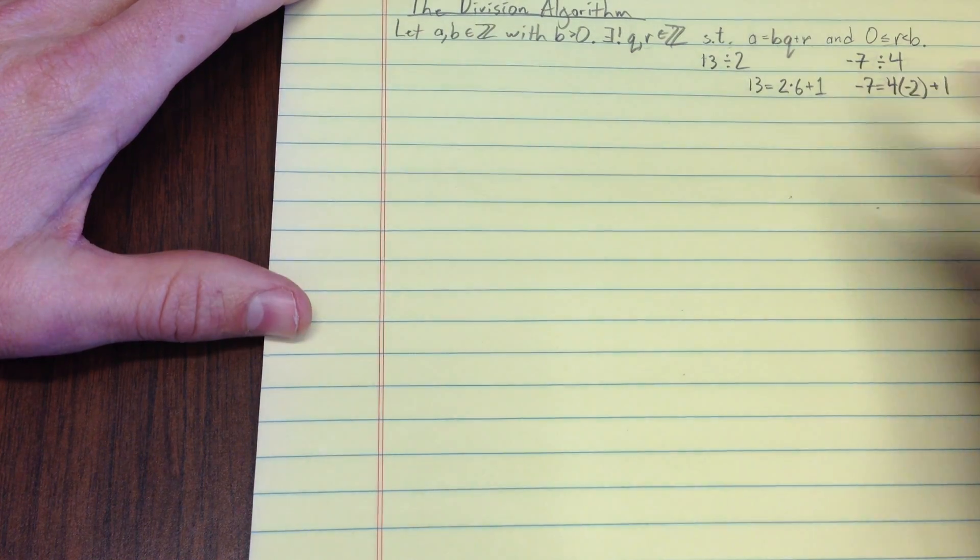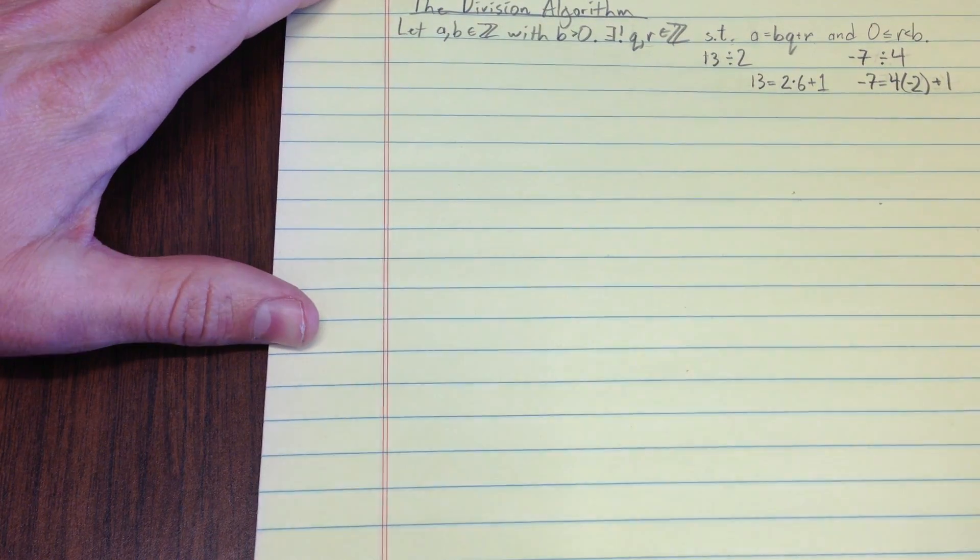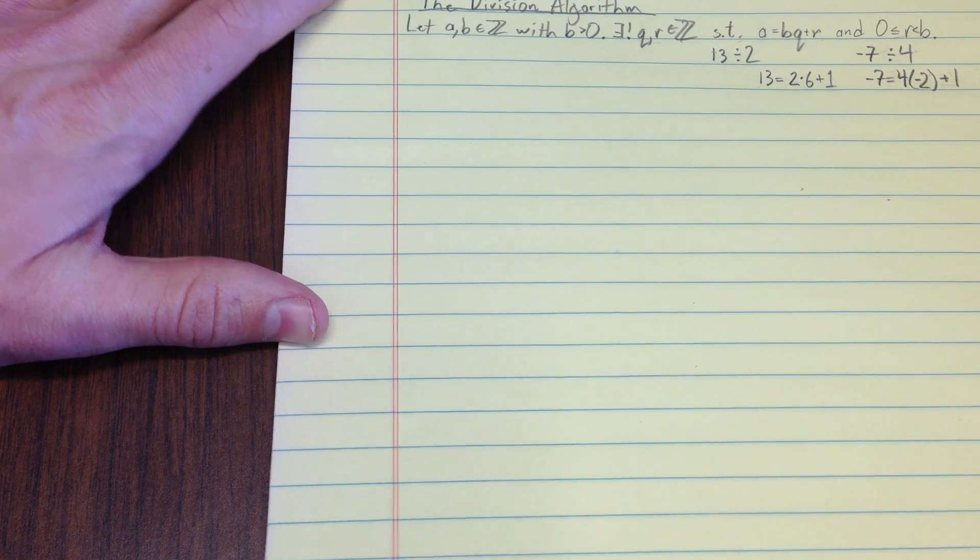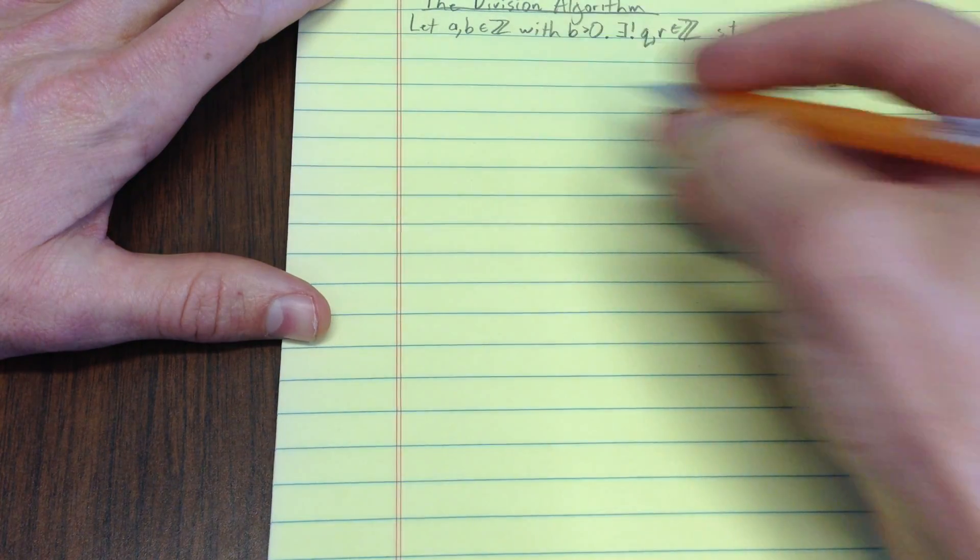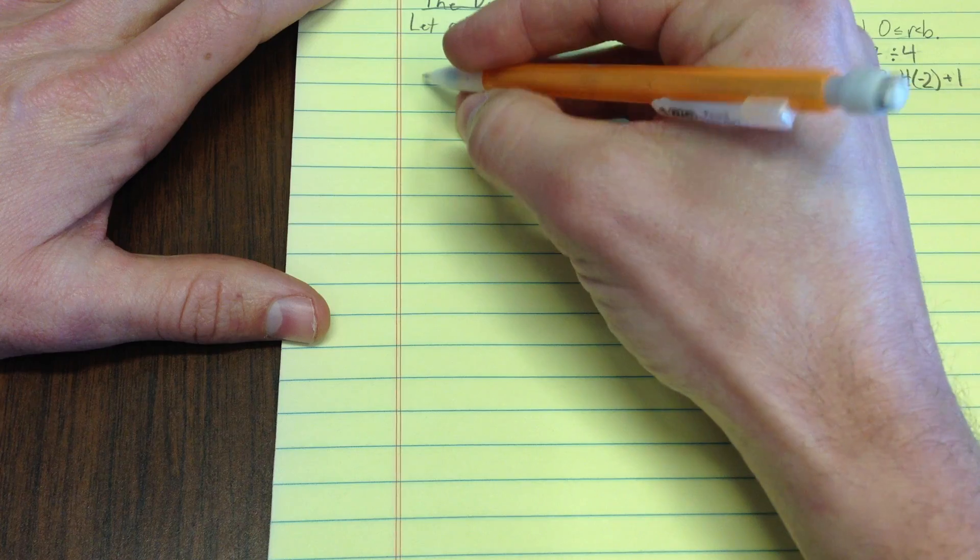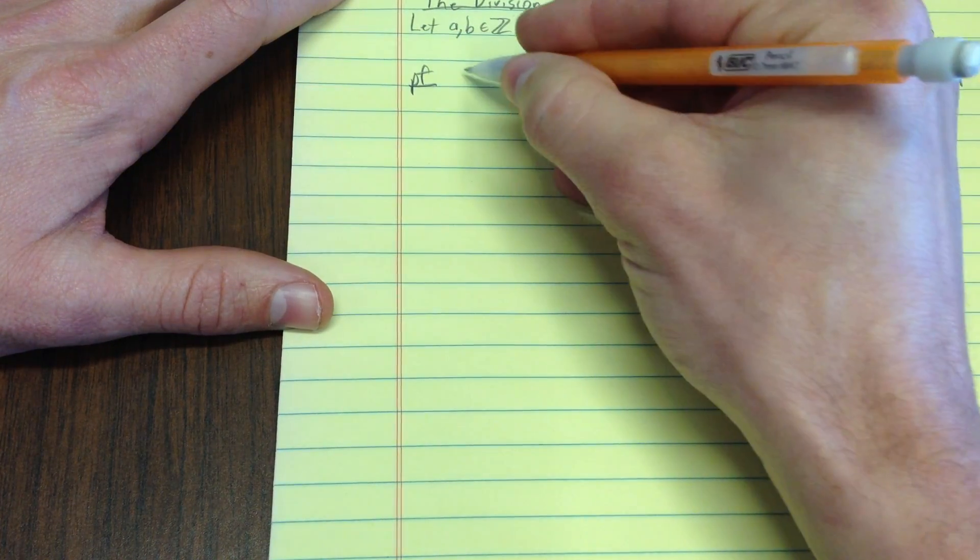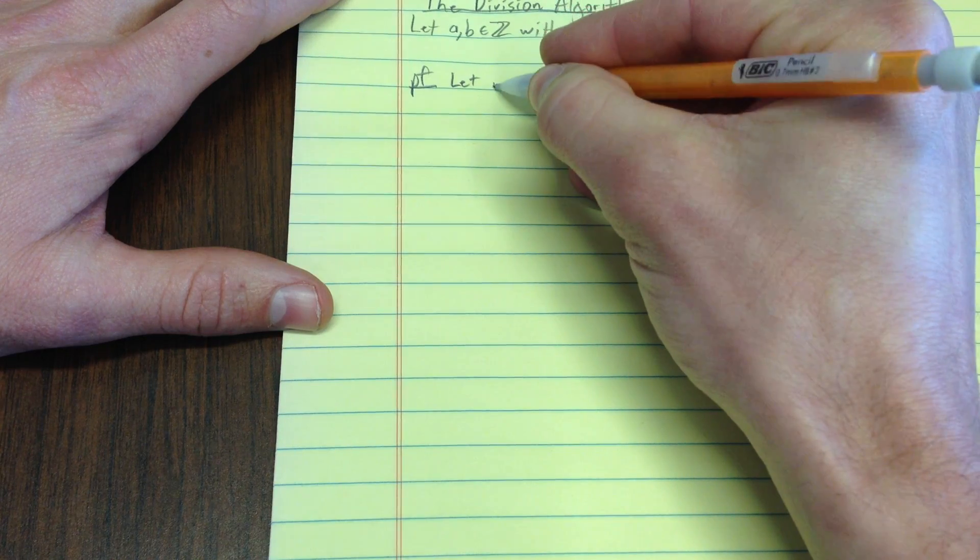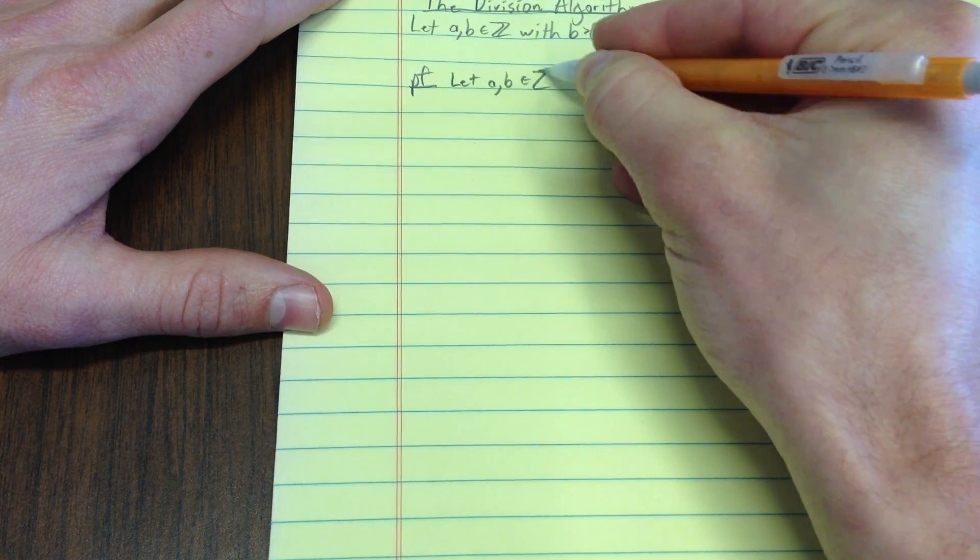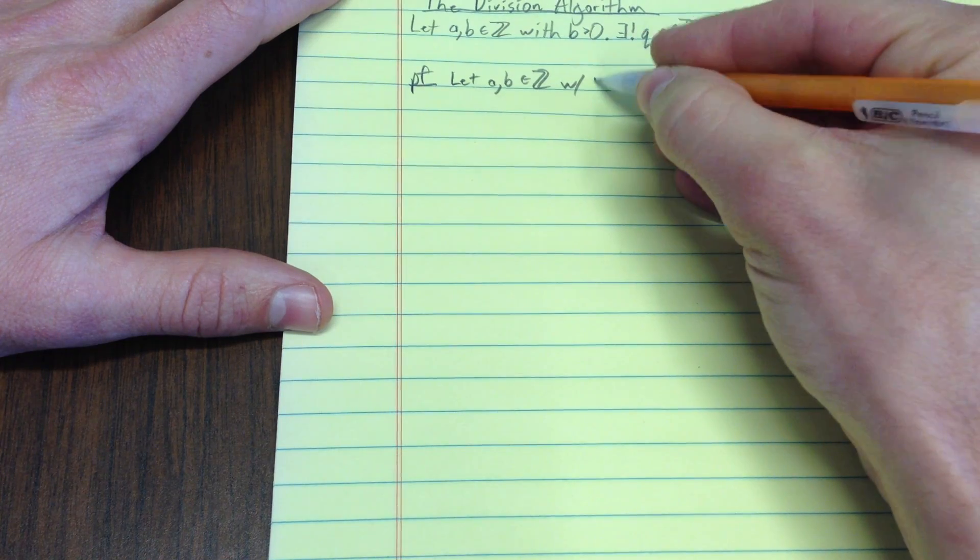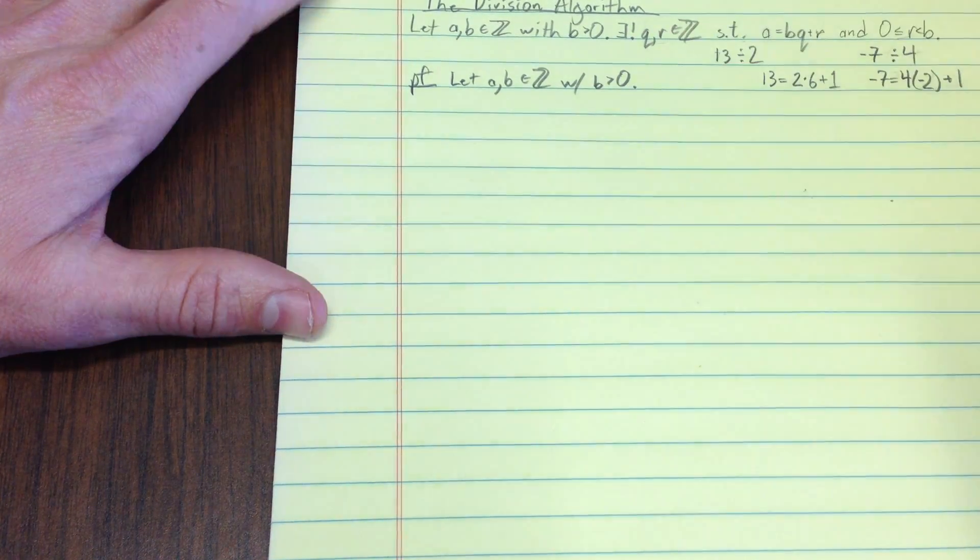But that happens all the time and that's what we're going to do in the proof here. Now, the proof is sort of a creative throwback to the well-ordering axiom. And here's sort of how it goes. I usually write, proof.